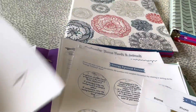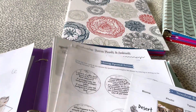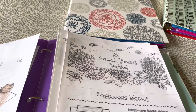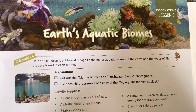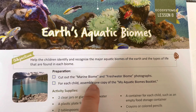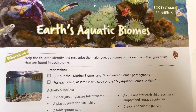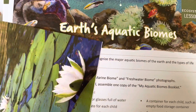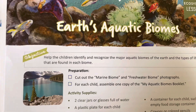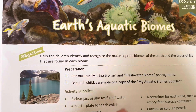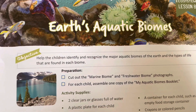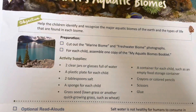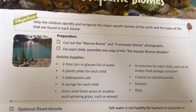We're going to finish up with our last bit today — the aquatic biomes booklet. Here we have lesson eight. Again, we started this the other day. You're supposed to cut out the marine biome and freshwater biome photographs — I have already done that. I prepped this in the summer, and it was much easier to have everything prepped all at once for all the units. Each girl had a copy of the aquatic biomes booklet in their own science binders.